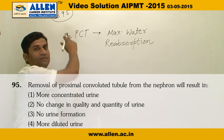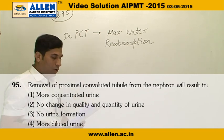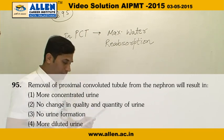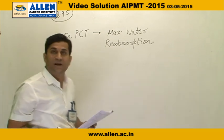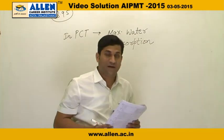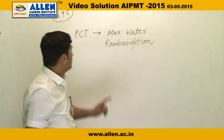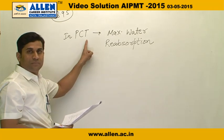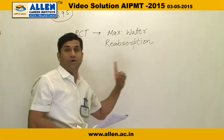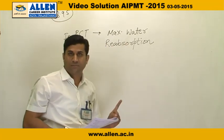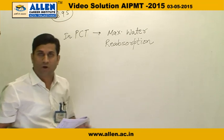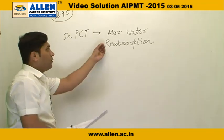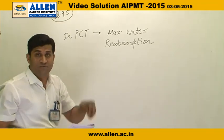Question number 95: removal of the proximal convoluted tubule from the nephron will result in what? In the PCT, maximum water reabsorption occurs. If we remove the PCT, then water reabsorption will be very poor.